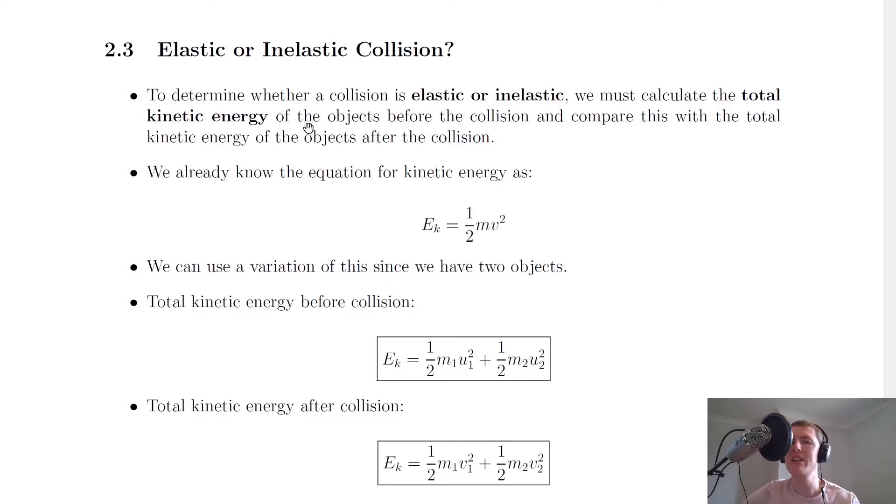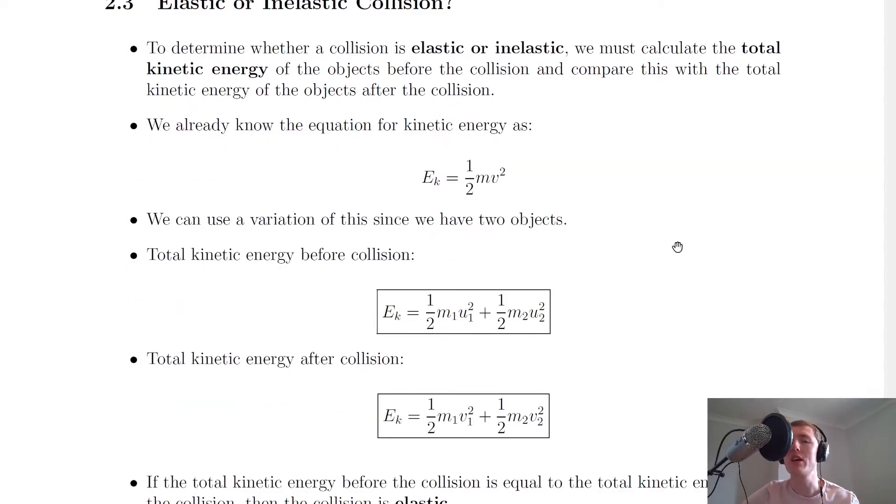Now you should already know the equation for kinetic energy from National 5 Physics, which is Ek equals a half mv squared, where m is the mass of our object and v is its velocity.